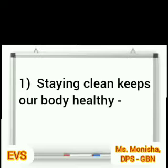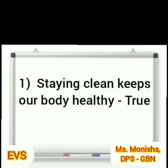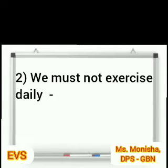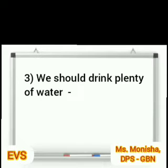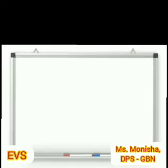So let's start. Number 1: staying clean keeps our body healthy. Children, is it right or wrong? Staying clean keeps us healthy — yes, so we will write true in front of that. Number 2: we must not exercise daily. But we had discussed that we should exercise daily, so this is incorrect. So we will write false in front of that. Now number 3: we should drink plenty of water. This means that we should drink a lot of water, which is correct. So we will write true in front of that.